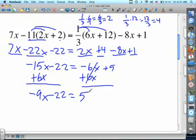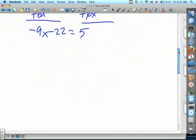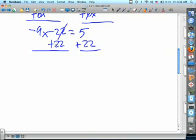Now I need to isolate the variables so I need to have the variables equal to one number. Well to do that I need to add 22 to both sides. And again that is the addition property of equality. So that turns into a 0. So here I get negative 9x equals 27.